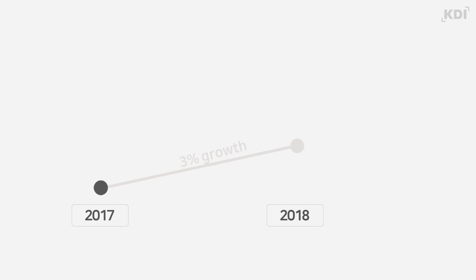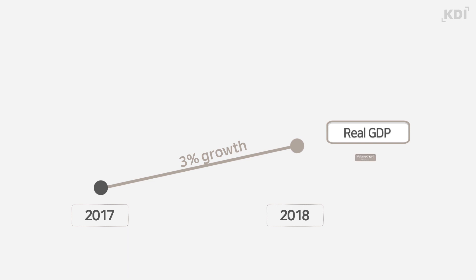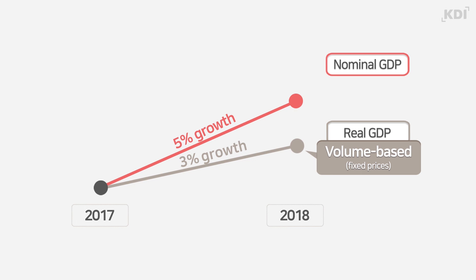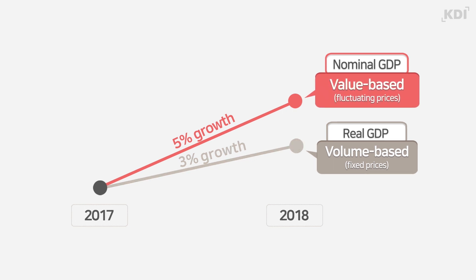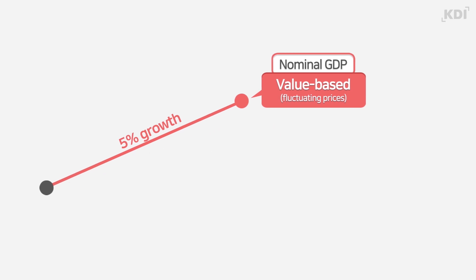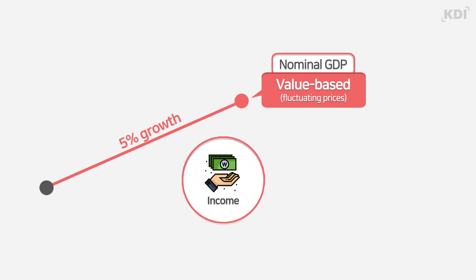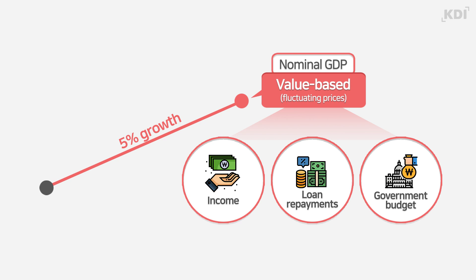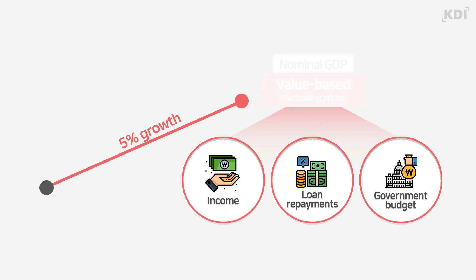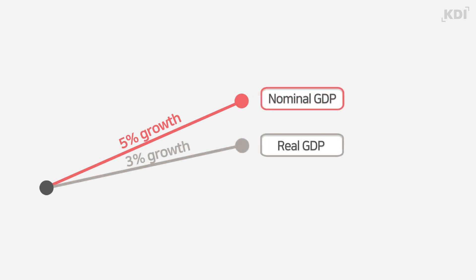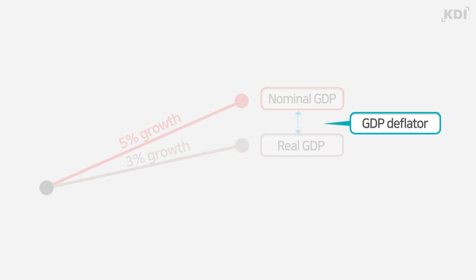Generally, the economic growth rate is calculated using the real GDP growth rate, which fixes prices to look at the changes in volume. This differs from the nominal GDP growth rate, which reflects the changes in prices and represents the value amount. Nominal GDP is an important economic indicator as most aspects of everyday life — for example, income, loan repayments, government budget, etc. — are all expressed in terms of amount and not volume. This discrepancy between the nominal and real GDP is called the GDP deflator.